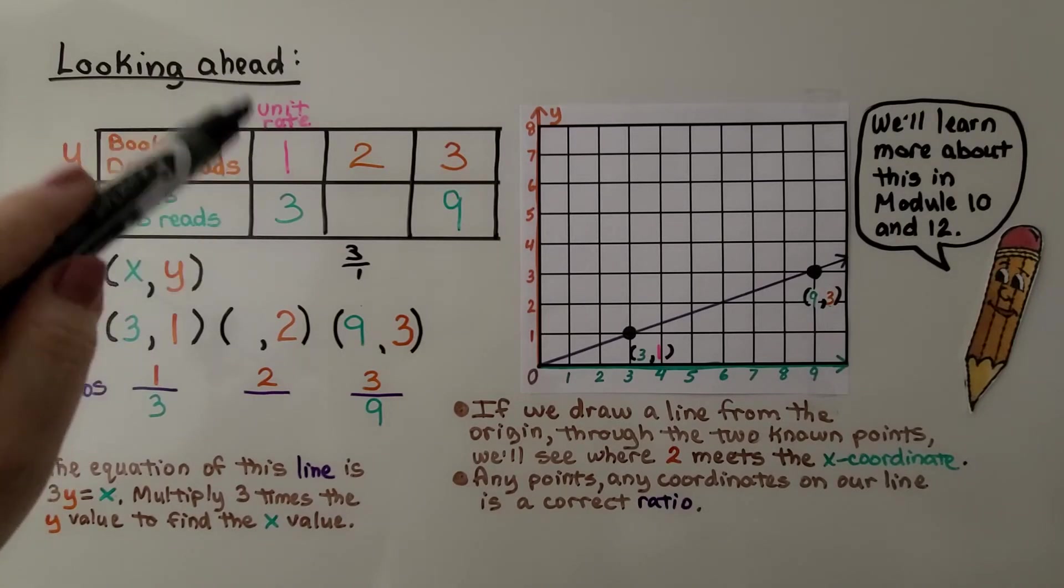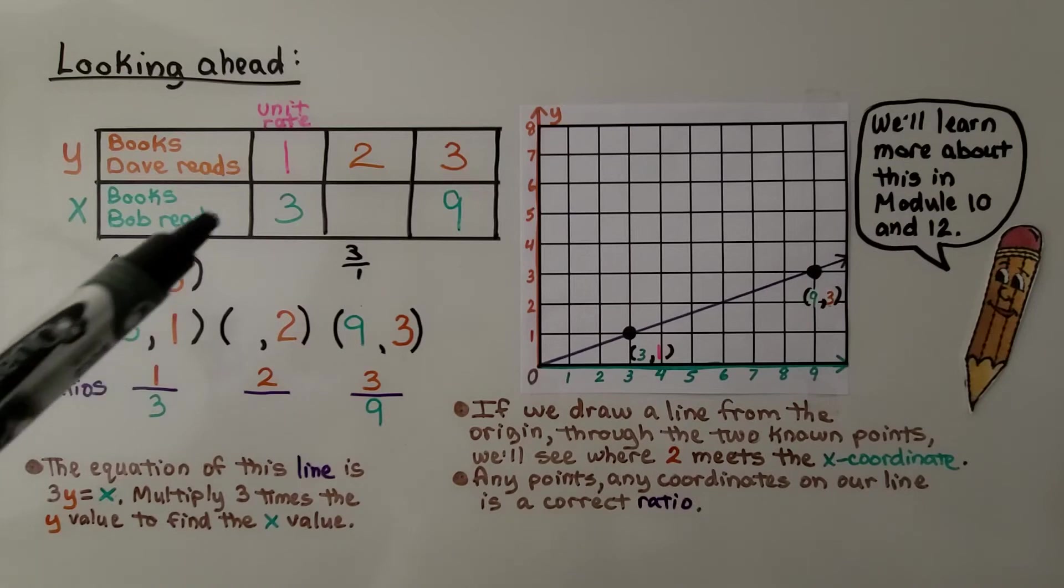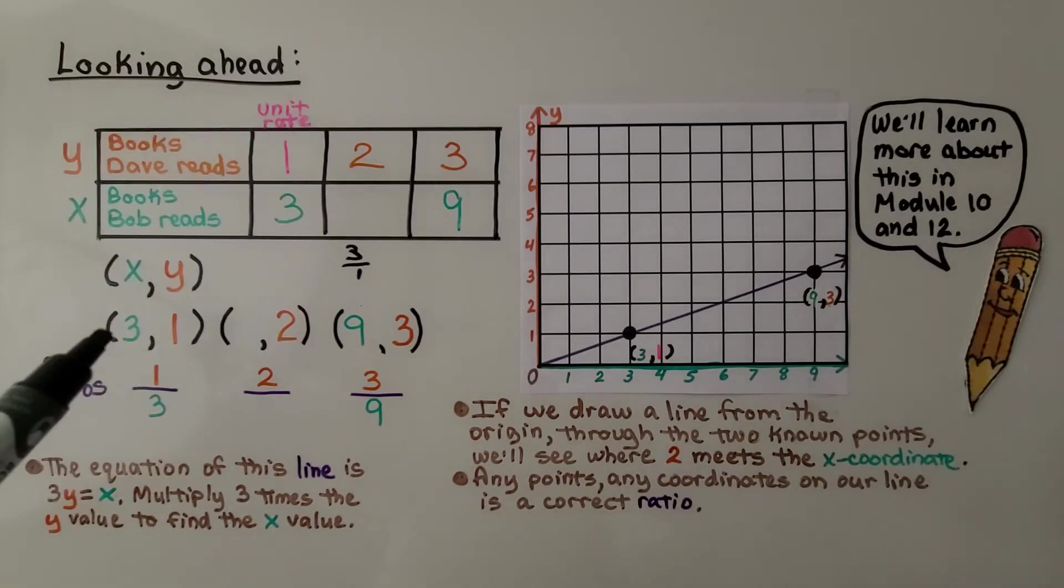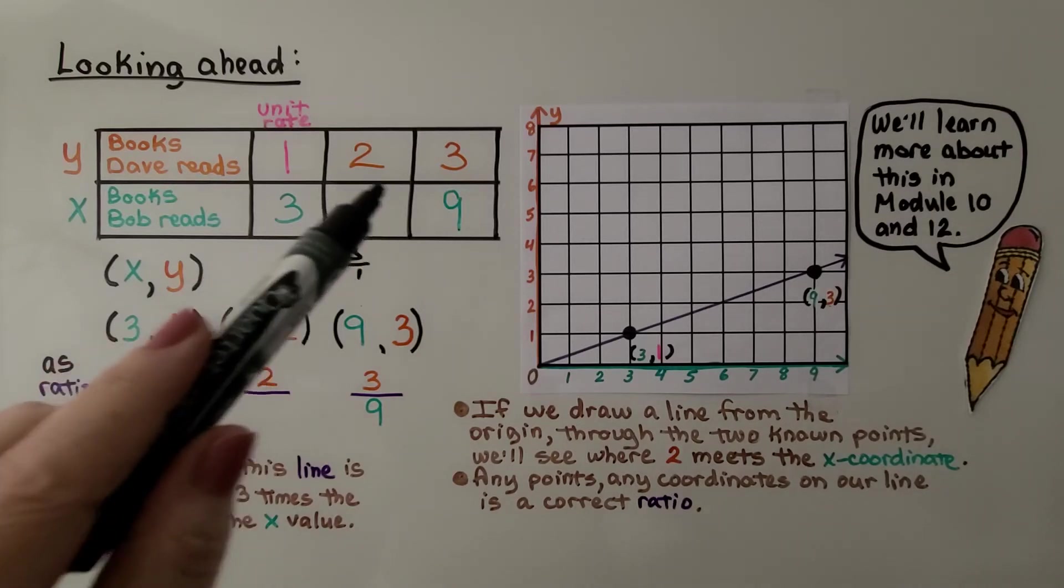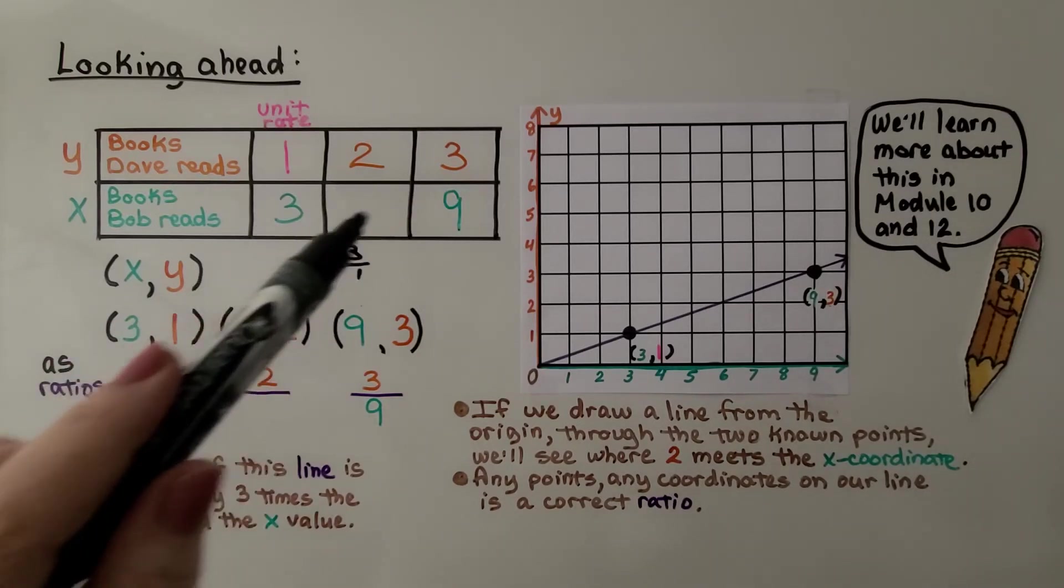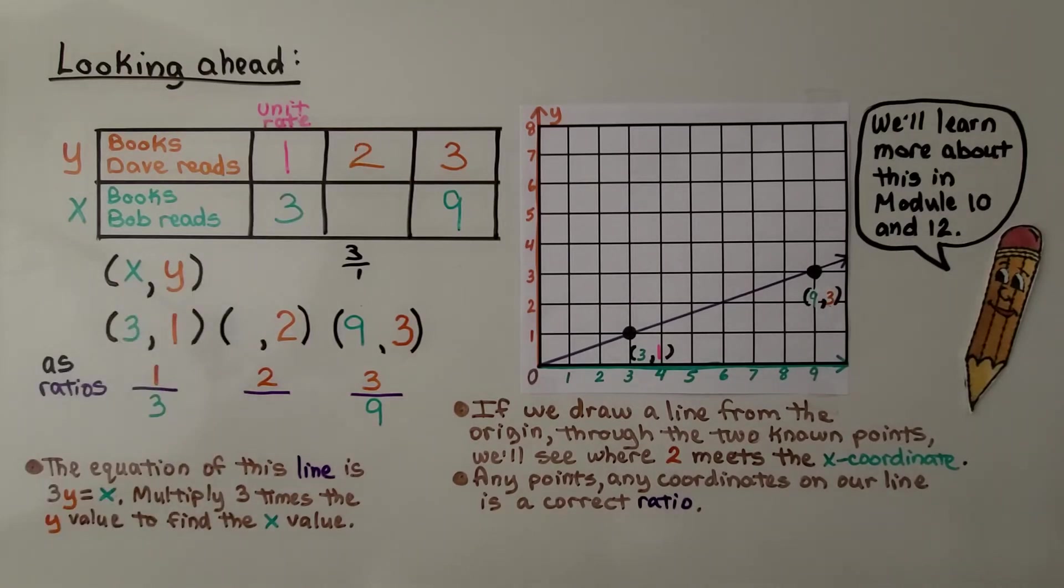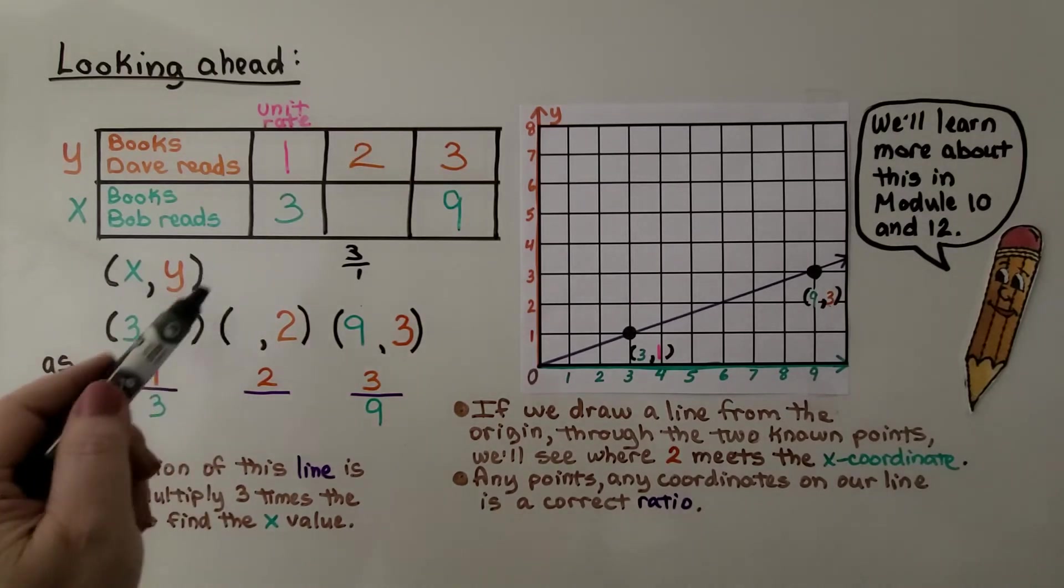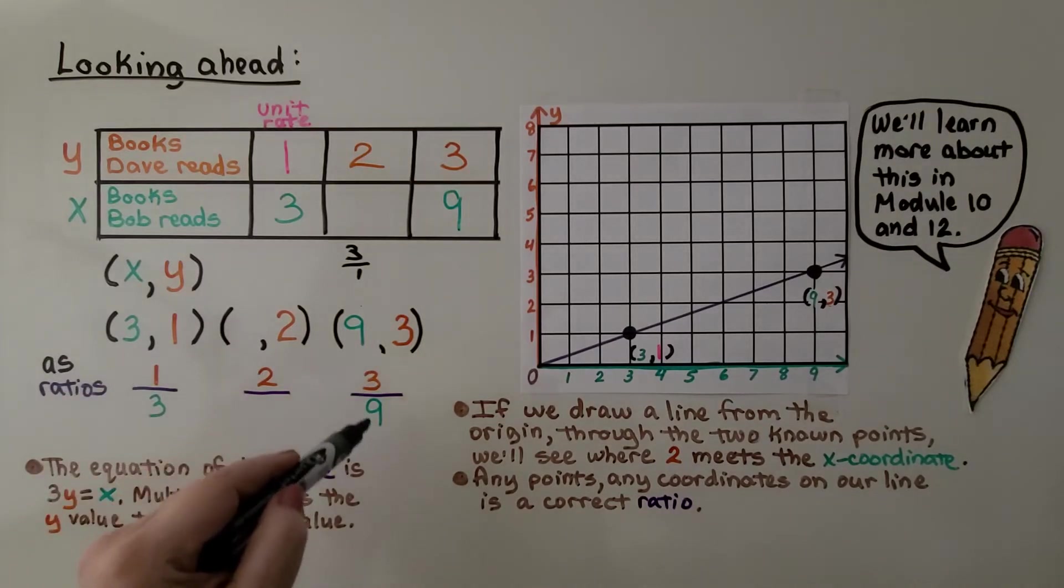Now, using this column to make our ordered pair of x and y. So we'd have x and y. We'd have a 3 and a 1. And we had to find how many books Bob read if Dave read 2. If you remember that in the last video. So as ratios, we have 1 to 3, 2 to something, 3 to 9.